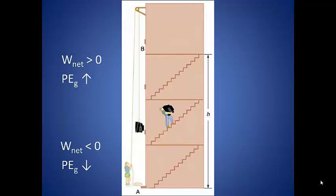If negative work is done on the object, this means that the distance above the Earth is decreasing, and so the gravitational potential energy also decreases.